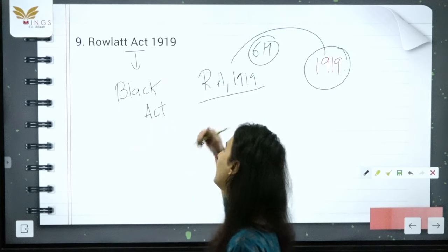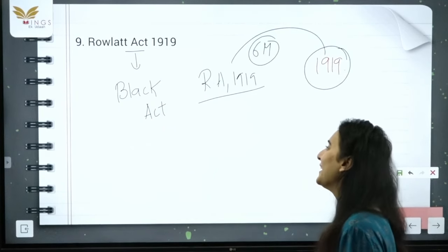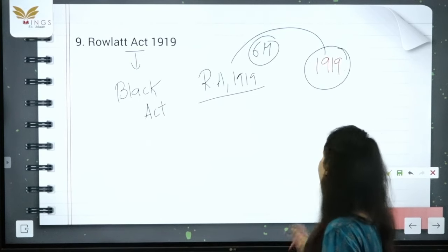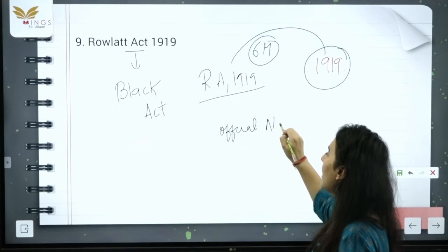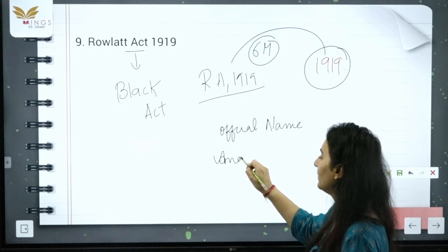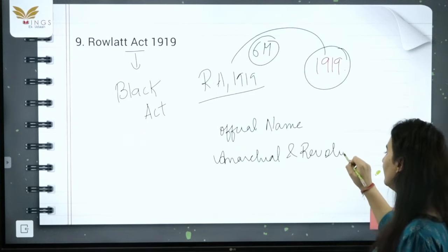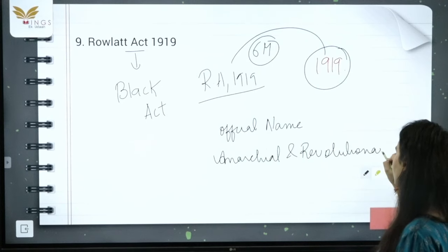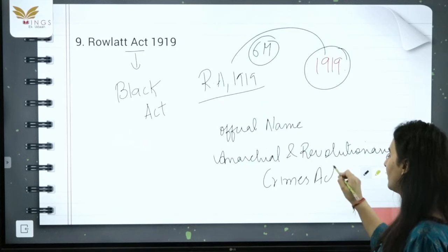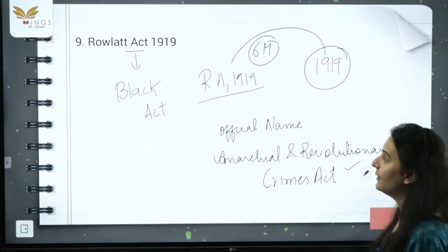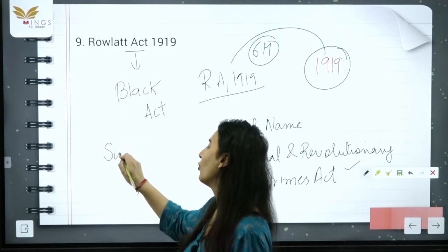We will study the Rowlatt Act in more detail some other time — there is enough for a full half-hour lecture on it. The official name of the Rowlatt Act was the Anarchial and Revolutionary Crimes Act. It is called the Rowlatt Act because it was introduced by Sydney Rowlatt.